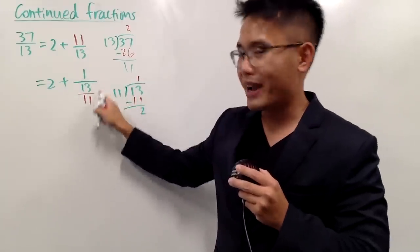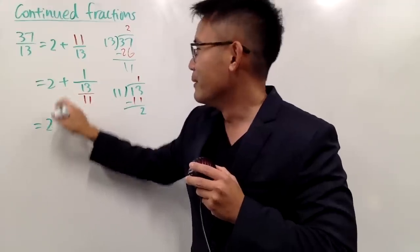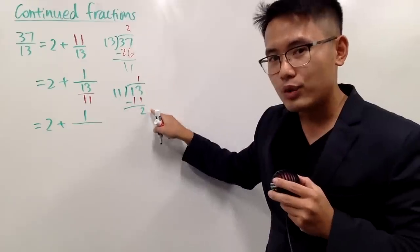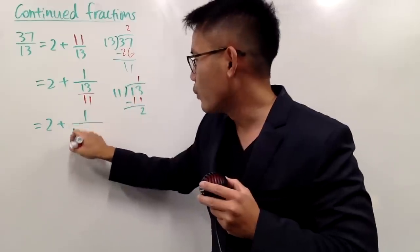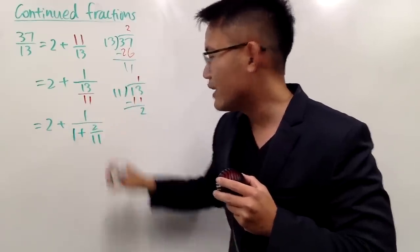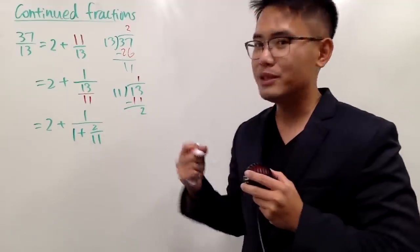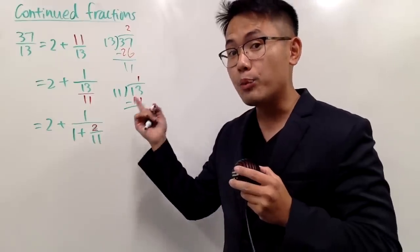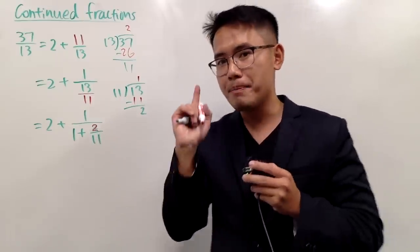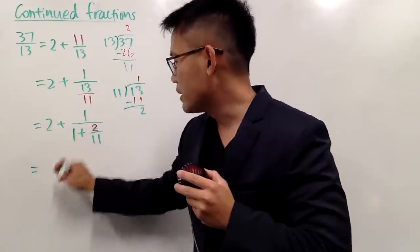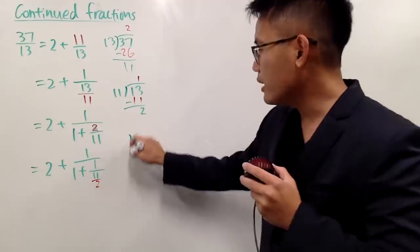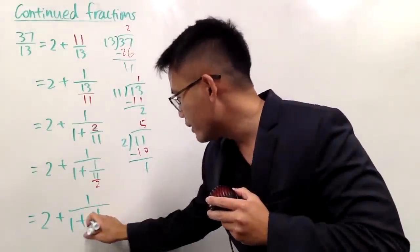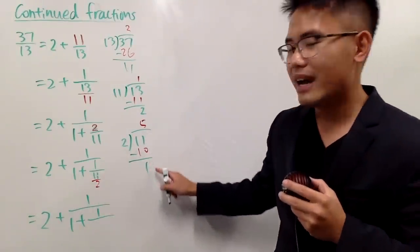So I can just continue, putting down 2 plus 1 over — and 13 over 11 is 1 and 2 over 11, so I put down 1 plus 2 over 11. Are we done? No, because we can actually continue. I can bring this 2 down, and whenever you bring things down, the top will become a 1. Continuing: this is 2 plus 1 over 1 plus 1 over — and 11 over 2 is 5 and 1 half.